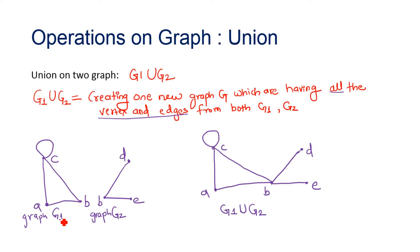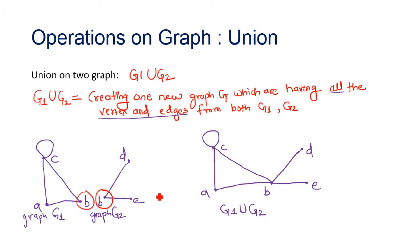For example, here we have graph G1 with three vertices A, B, C and graph G2 with three vertices B, A, D. Now to unite these graphs, we look for common vertices. Vertex B is common, so we join the graphs there. Whatever diagram we get is our union.